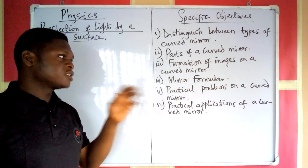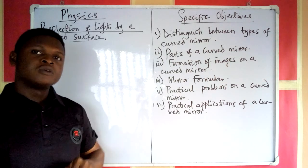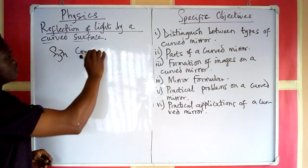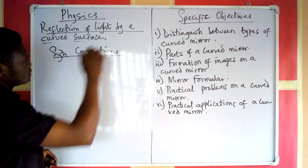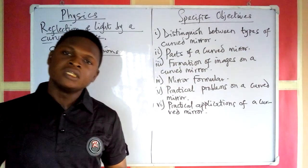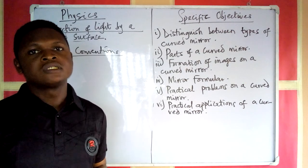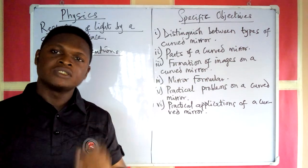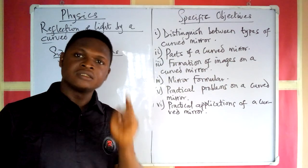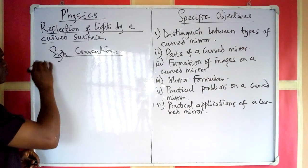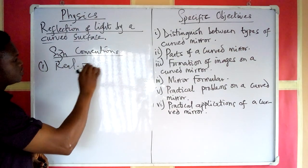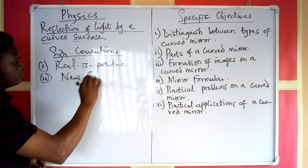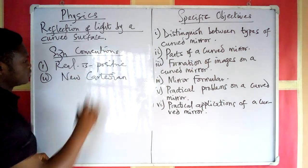For us to solve practical problems under curved mirrors, we need to look at what we call sign convention. The sign conventions used in mirrors are of two types: what we call the real-is-positive sign convention, and the other is called the new Cartesian sign convention. In order to make things easier, we are going to use only one — the real-is-positive sign convention.